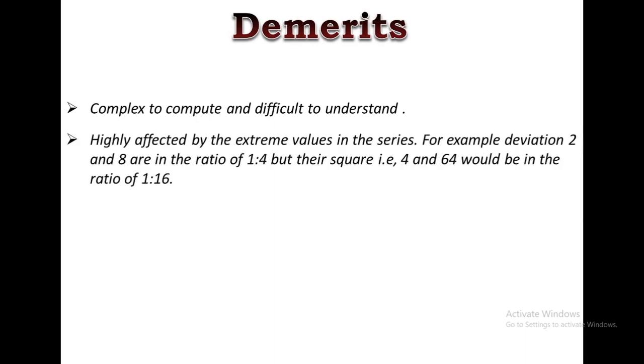Demerits of standard deviation: Standard deviation is complex to compute and difficult to understand compared to other measures of dispersion like quartile deviation or mean deviation. It gives more weight to extreme items and less to those near the mean, because the square of deviations which are big in size would be proportionally greater than the square of those deviations which are comparatively small. For example, deviations of 2 and 8 are in the ratio of 1:4, but their squares, 4 and 64, would be in the ratio of 1:16.